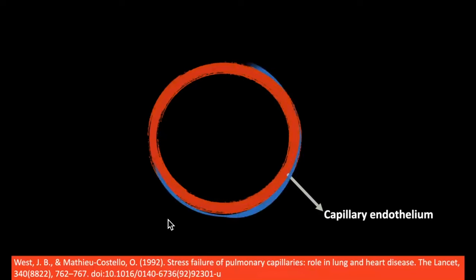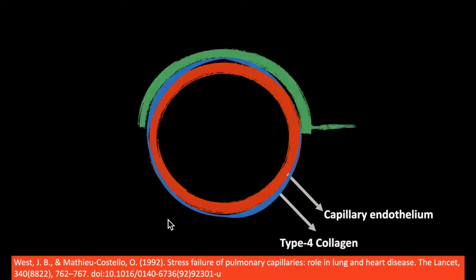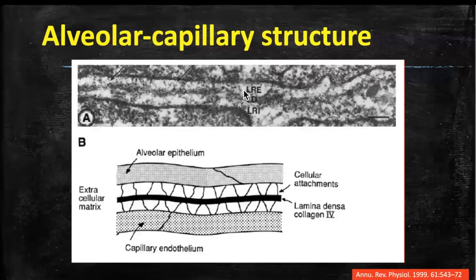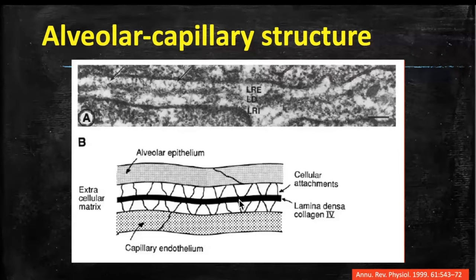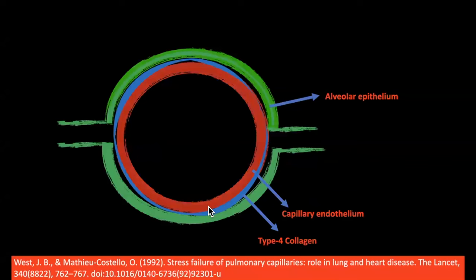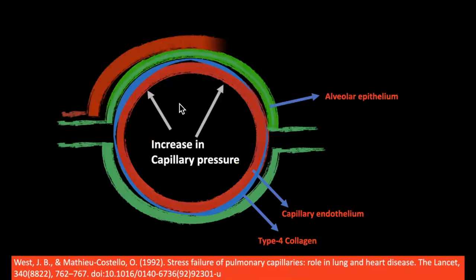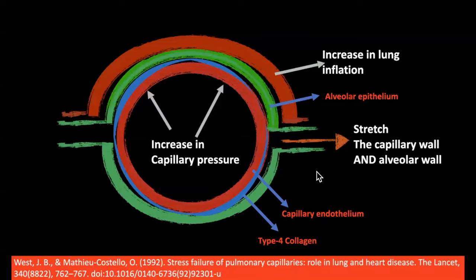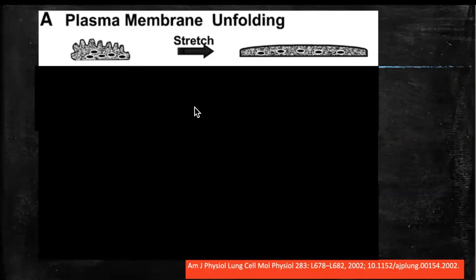This is a schematic of the capillary endothelium, with collagen type 4 fibers holding the capillary endothelium and alveolar epithelium together. Microscopically you have the alveolar epithelium above and capillary endothelium below, bonded by the lamina densa of collagen type 4 fibers. Increased capillary pressure — from pulmonary hypertension — or excess lung inflation leads to excess stretching of this alveolo-capillary membrane, producing stress and strain in the system.